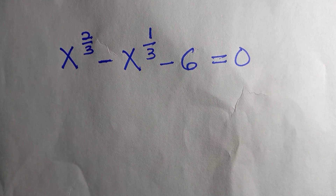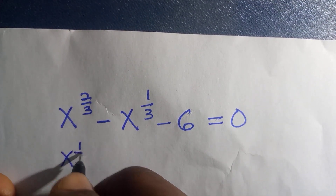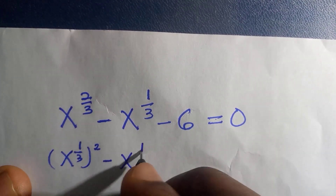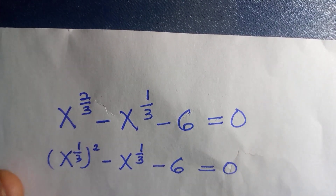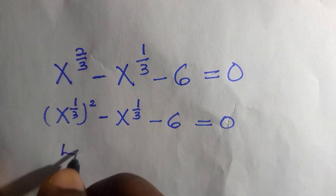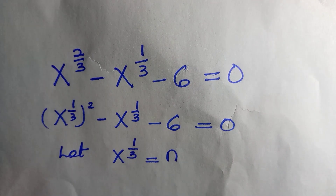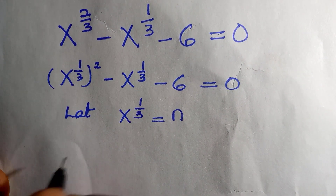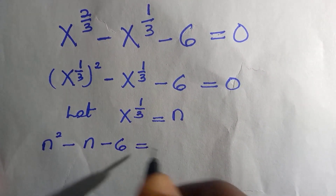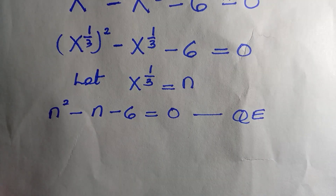Don't skip any stage. The first thing we are going to do is write x raised to the power of one-third, everything squared, minus x to the power of one-third minus six equals zero. At this stage we have a common essence for one-third, and we are going to let x to the power of one-third equal to the letter n.